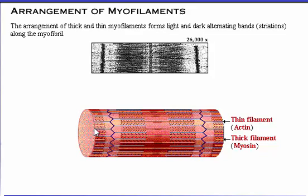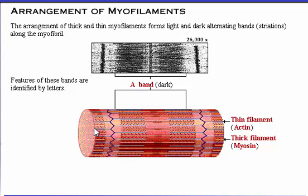The arrangement of thick and thin myofilaments forms light and dark alternating bands along the myofibril, creating the cell's striated appearance as shown in this photomicrograph and diagram. Features of the light and dark bands are identified by letters. The dark bands are called A-bands, corresponding to the length of the thick filaments. The light bands, called I-bands, alternate with the dark bands. The A-band contains only thin filaments and corresponds to the distance between adjacent thick filaments. During muscle contraction, the I-band gets narrower.